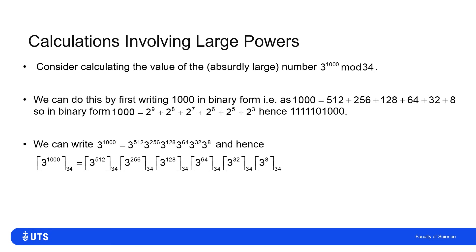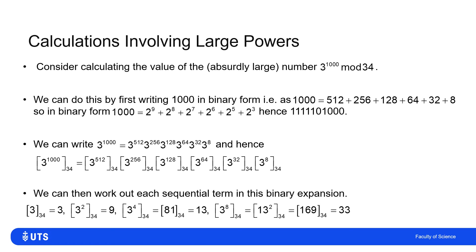It's not instantly obvious why we'd write it in that form, but if instead of 3 to the power 1000 I write 3 to the 512 times 3 to the 256 times 3 to the 128 and so on, then I know the remainder of 3 to the 1000 when divided by 34 can be split into the remainder of 3 to the 512 divided by 34, times 3 to the 256 divided by 34, and so on. Taking the product of those remainders should give the same result.